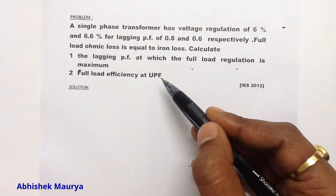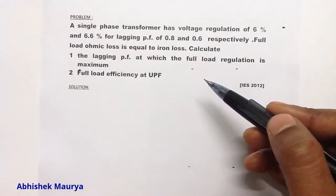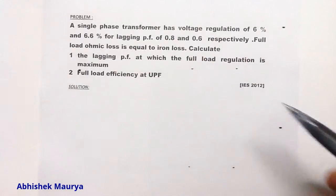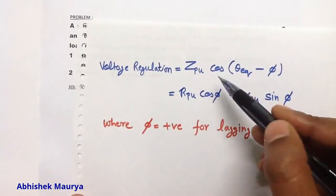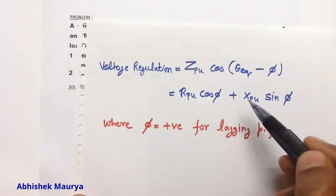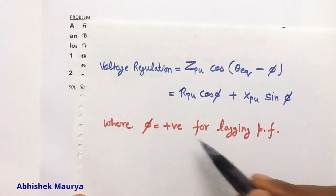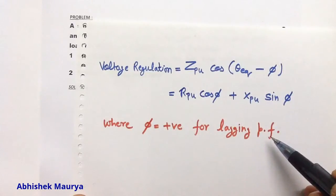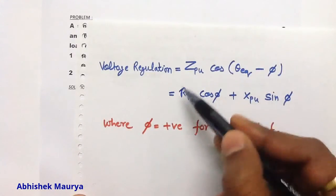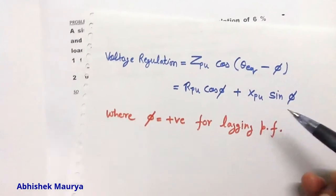We know the formula of the voltage regulation. The formula for the voltage regulation is Z per unit cos(theta_equivalent) minus phi, or R per unit cos(phi) plus X per unit sin(phi). Remember, phi is positive for lagging power factor. I am going to use this second formula for solving this question.